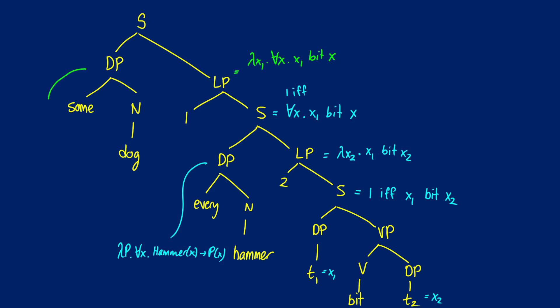Let's do that for some dog. What we're going to get, if we remember from our other videos, is lambda P dot exists in X. This will be dog X and PX.